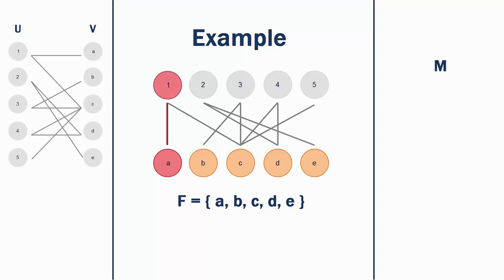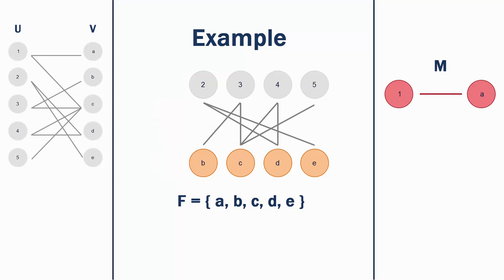With the layering graph of height 1, this is a trivial task. Once we have created our path P between a vertex in F and an unmatched vertex in U, we add all the currently unmatched edges in P to the matching M for the graph. We also remove any currently matched edges from P from the matching M. In this iteration of our example, there are no existing matching edges. We now remove all the vertices in the path from the layering graph, and any edges connected to those vertices.